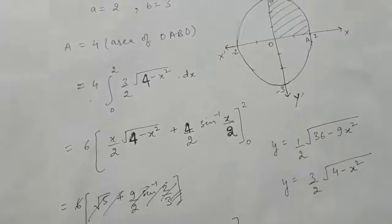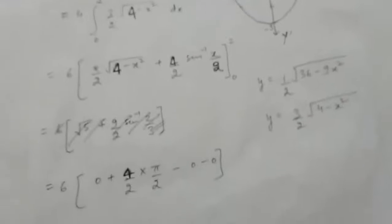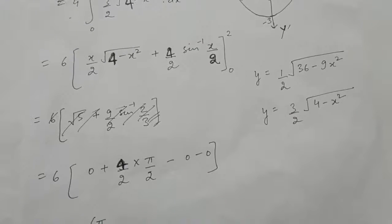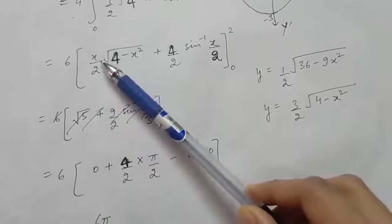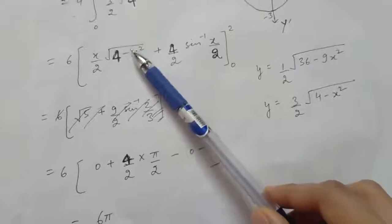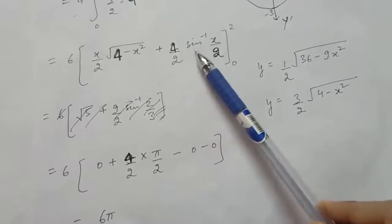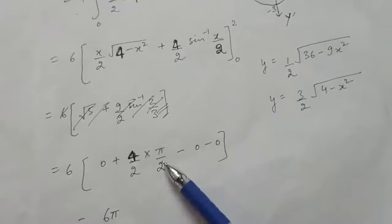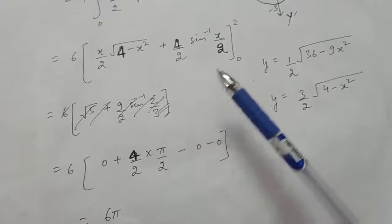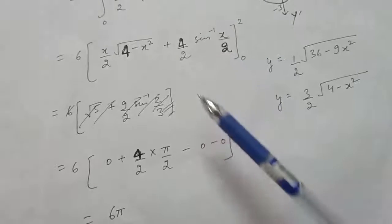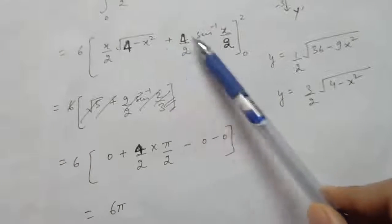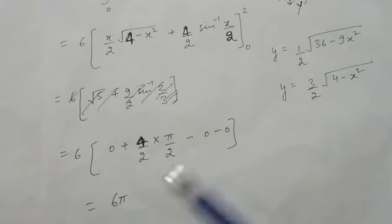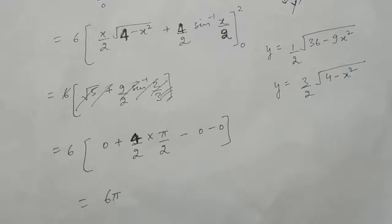Now put the limits. First, put x = 2: this term becomes 0 plus (4/2) × sin⁻¹(1) = 4/2 × π/2. Then put x = 0: both terms become 0. So you will get the final answer as 6π.